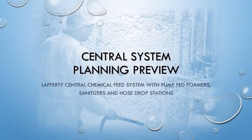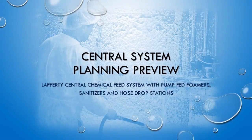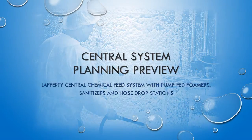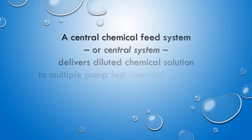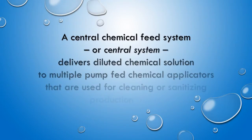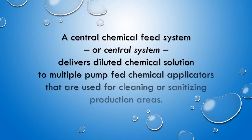This is an overview of how to plan a central chemical feed system for foam cleaning, rinsing, and sanitizing. A central chemical feed system, or central system, delivers diluted chemical solution to multiple pump-fed chemical applicators that are used for cleaning or sanitizing production areas.